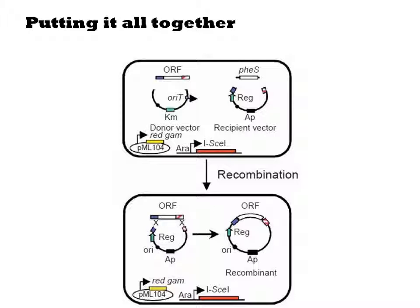By growing the cells in the presence of para-chlorophe, any plasmids that still contain phi-S will be eliminated. The result of these selections is that only the recombined plasmid, in which phi-S has been displaced by the arbitrary gene cassette, will survive.